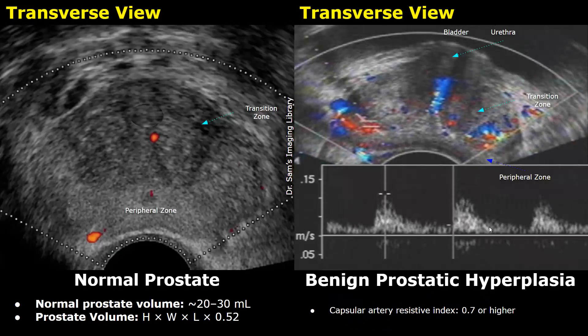One Doppler parameter that can be evaluated in BPH is the resistive index. In BPH, the resistive index of the capsular artery of the prostate is 0.7 or higher.